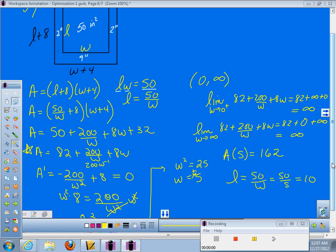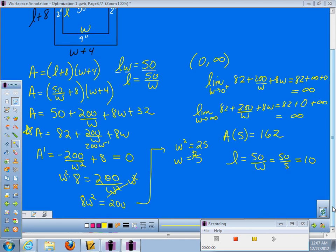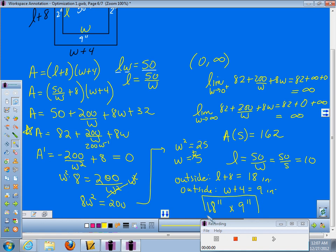The outside area, the length was actually supposed to be L plus 8. So if I do L plus 8, I'll have 18 inches. And the outside width was supposed to be W plus 4. So in our case, if the width 5 plus 4, that would be 9 inches. So we really should have paper here that's 18 inches by 9 inches in order to minimize the amount of paper here.